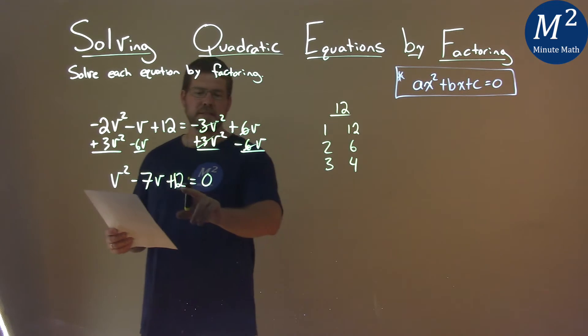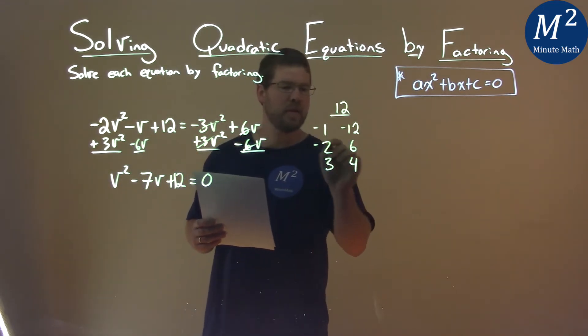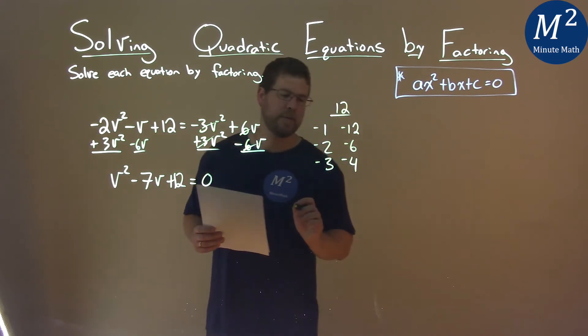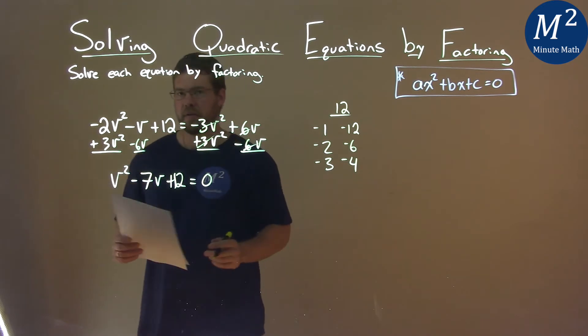Now, we know our c value is a positive number, and our b value is negative, meaning each one of these pairs must be negative here. Two negatives multiply to be a positive, but add to be a negative number.